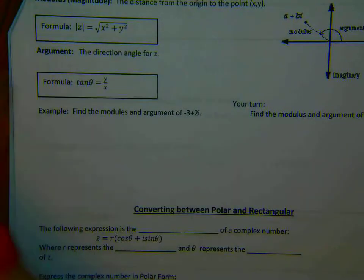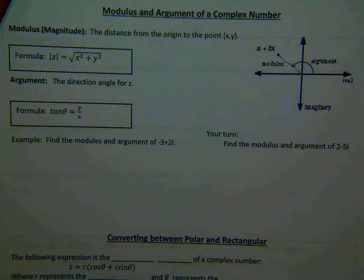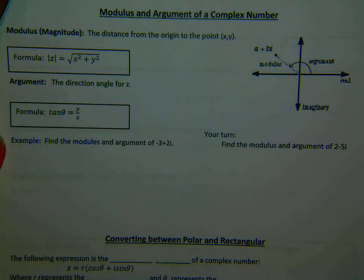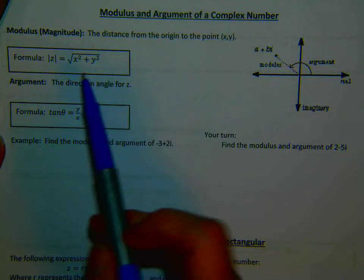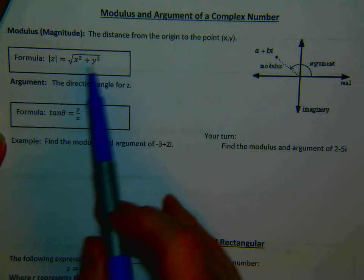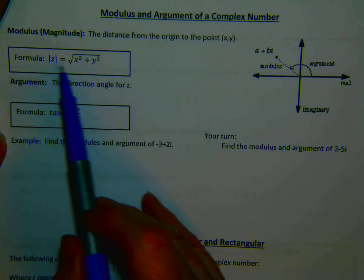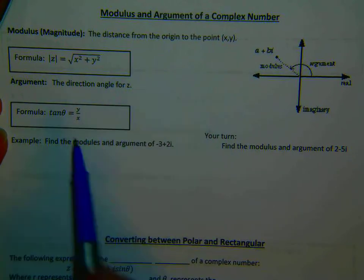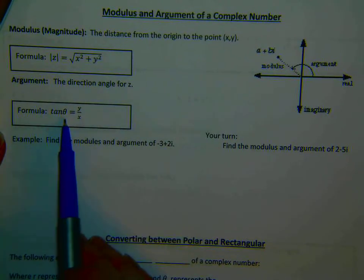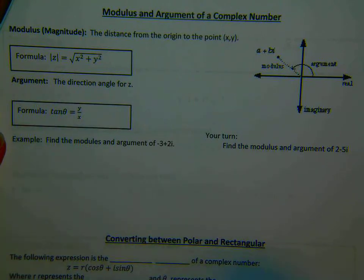We have some new vocabulary: modulus and argument of a complex number. The modulus is the magnitude - we remember this from our vector days at the beginning of the semester. The magnitude is the distance from the origin to the point, calculated as the square root of x squared plus y squared. The argument is the direction. We find direction using tangent: tangent of theta equals y over x, so theta is the inverse tangent of y over x.